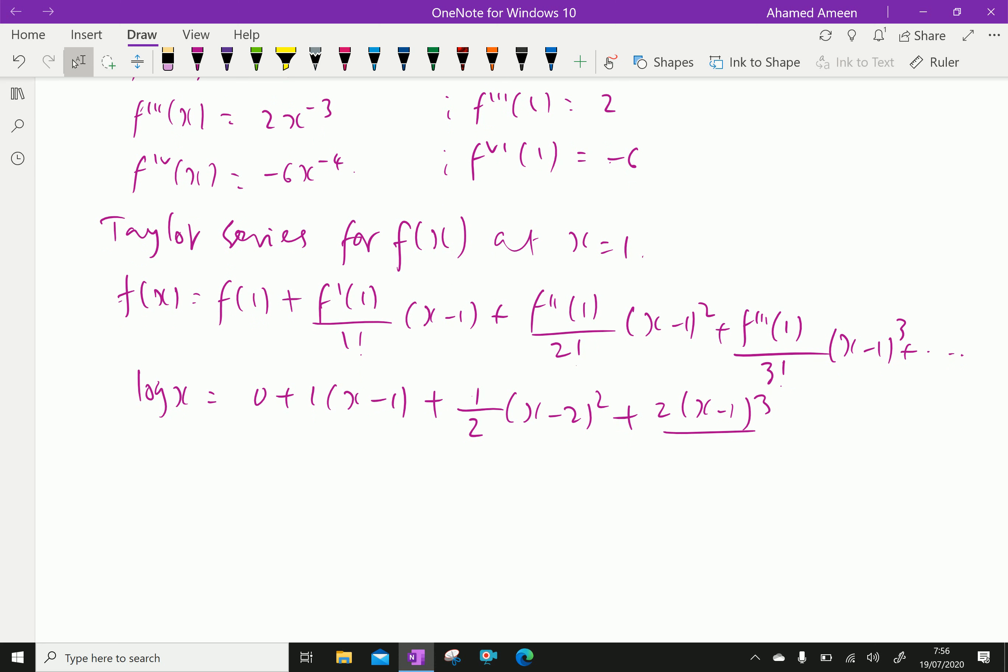Continuing, 2 by 3 factorial, then f^(4) is -6 times (x-1)^4 by 4 factorial. Now we will simplify this.